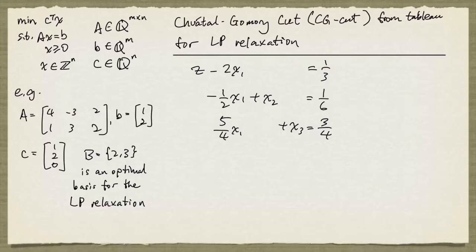The way we obtain a CG cut is to first look for a right-hand side value that is fractional. Here all the right-hand side values are fractional, so we can pick any one of them. Let's pick this second row. I'm going to rewrite it as: negative 1 plus 1/2, so I have negative x1 plus 1/2 x1 plus x2 equals 1/6.